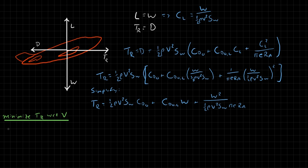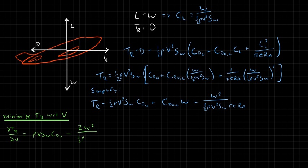Taking the derivative dTR/dv, we get rho v S_w C_D0 minus 2W-squared over (one-half rho v-cubed S_w pi e RA), and we set that equal to zero. The second term picks up a negative exponent of negative two when differentiated, bringing the v-cubed into the denominator.